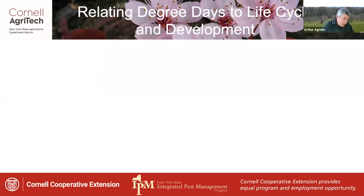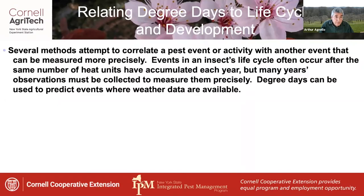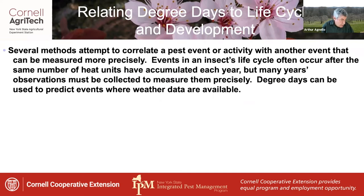In relating degree days to insect life cycles, there are several methods that attempt to correlate a pest event or activity with another event that can be measured more precisely. In the most commonly used method, it's assumed that events in an insect's life cycle often occur after the same general number of heat units have accumulated each year, but it usually takes many years of observations to estimate these precisely. Degree days can then be used to predict events where weather data are available.